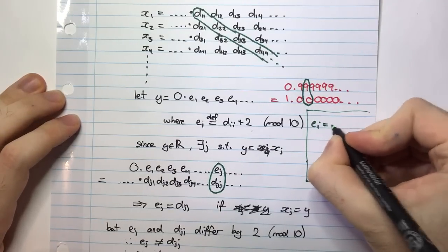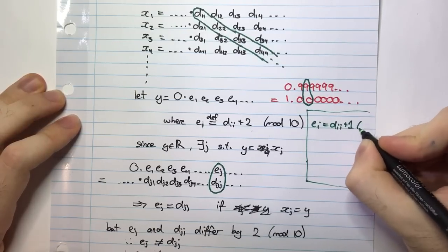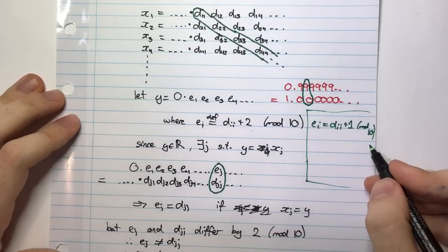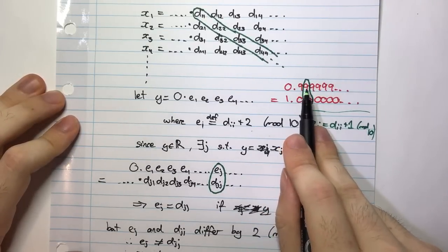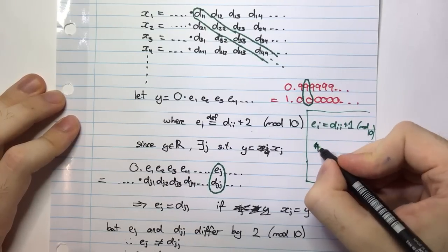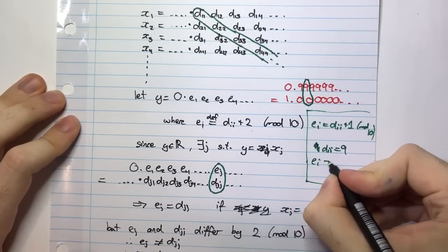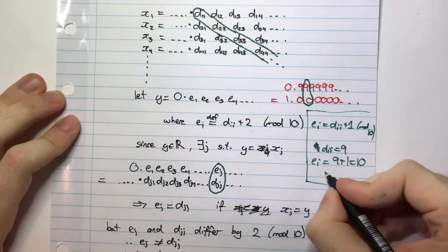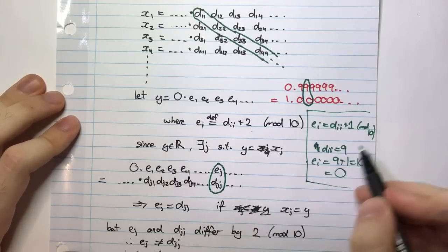Why do I know that? Because if I take this operation, let's say that I defined EI to be DII plus 1 mod 10. If I defined it as that, well, in this case, DI is 9. So EI is 9 plus 1, which is 10. But when I reduce this number mod 10, that gets me to 0, which I have here.